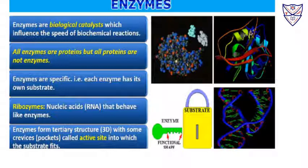It is like lock and key — for every enzyme, there will be only one substrate on which it acts. For example, ribozymes are RNA enzymes, that is, nucleic acids which behave as enzymes. They form a tertiary 3D structure with some pockets or crevices — this is where they bind with the substrate. The substrate comes and fits here at what is called the active site of an enzyme. In this way, enzymes are very specific and speed up all biochemical reactions happening in our body; otherwise the reactions would be too slow.